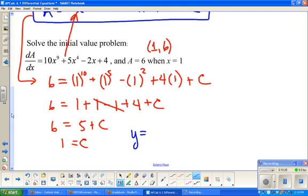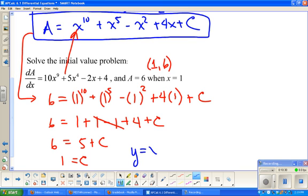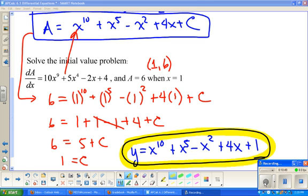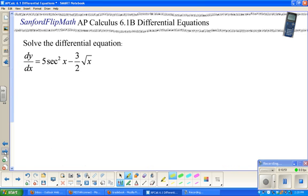I've got to put it all together. So y equals. I need to look up above. So x to the 10th plus x to the 5th minus x squared plus 4x plus 1. Just a little highlight just for kicks and giggles. Alright. Alrighty then. Let's do another. This looks nice. And by nice I mean hideous.